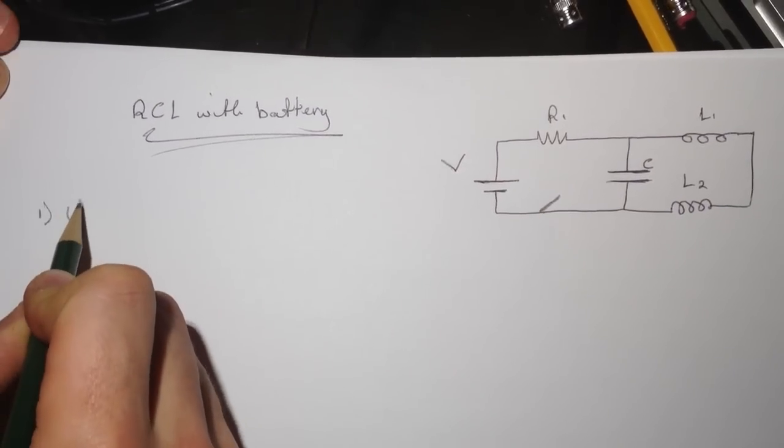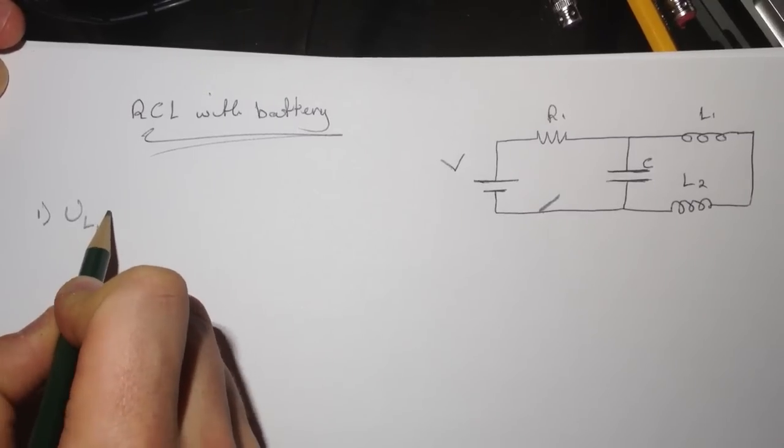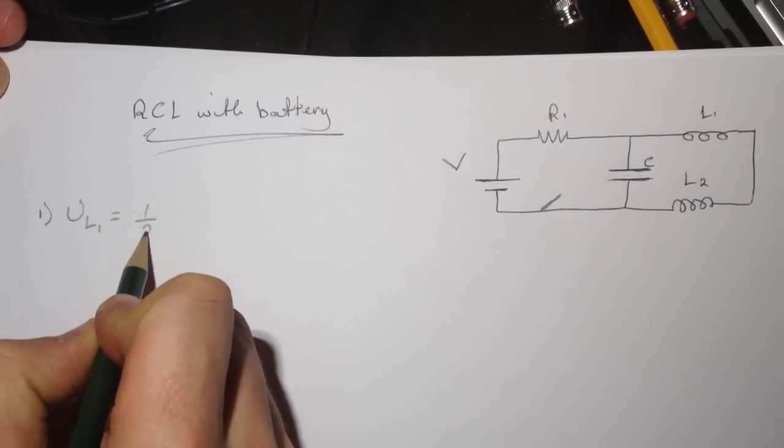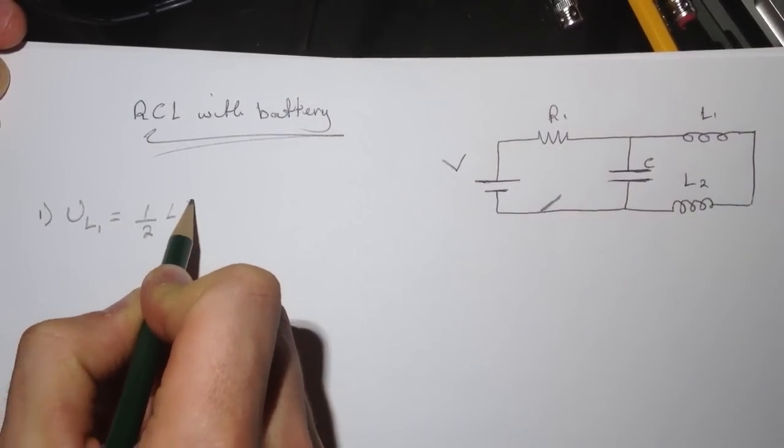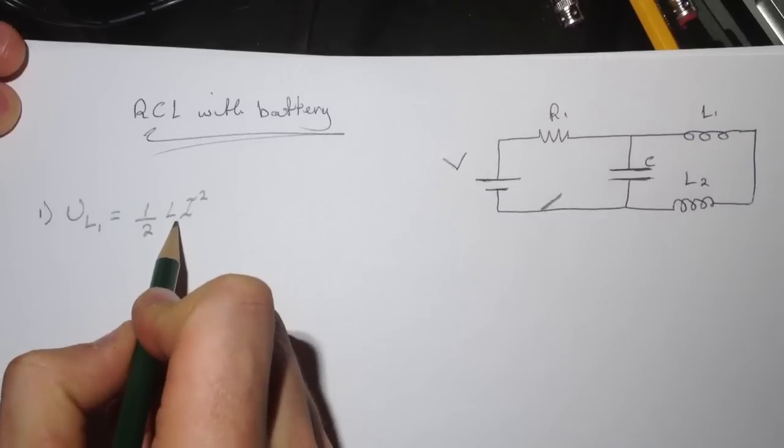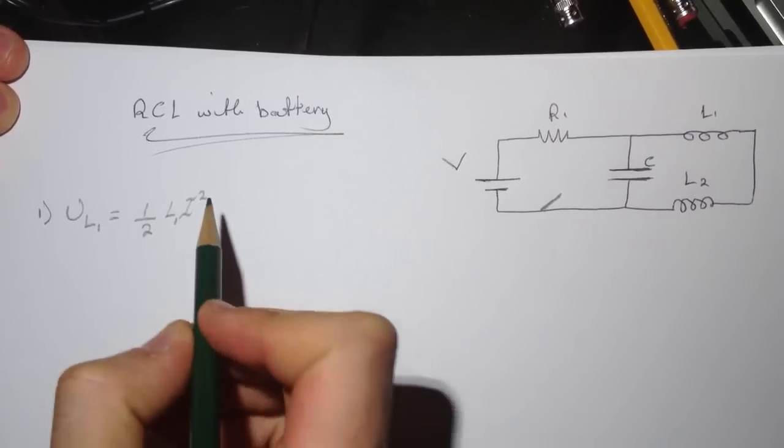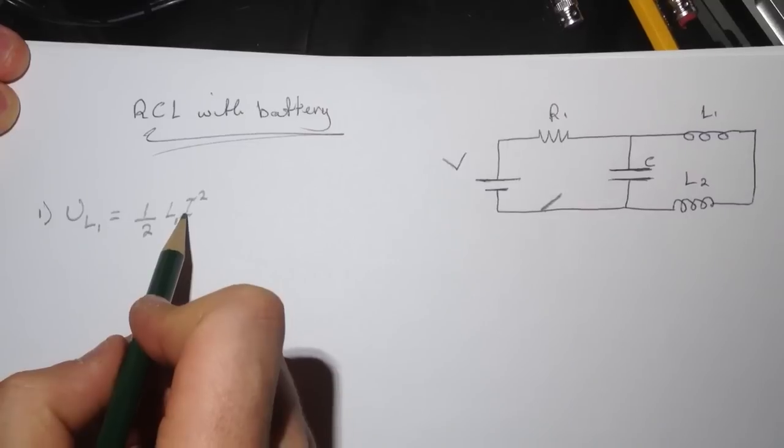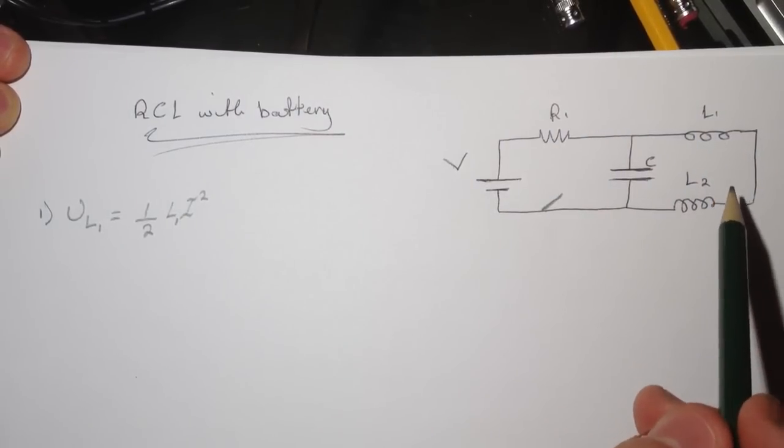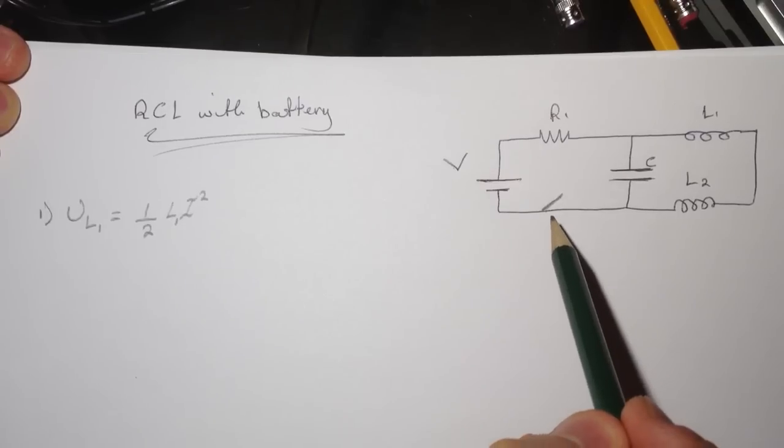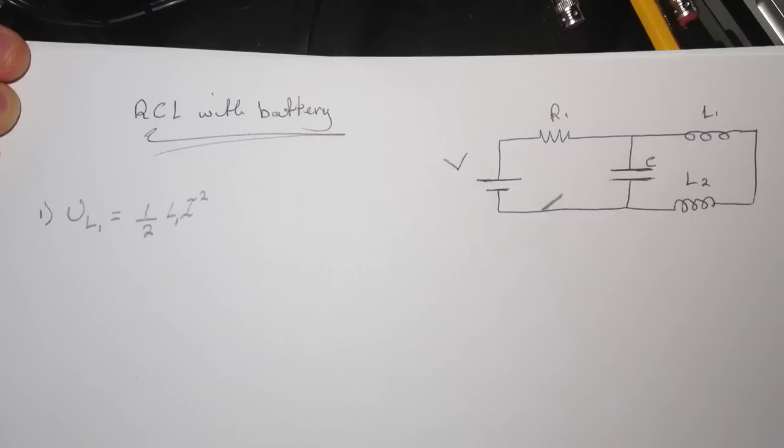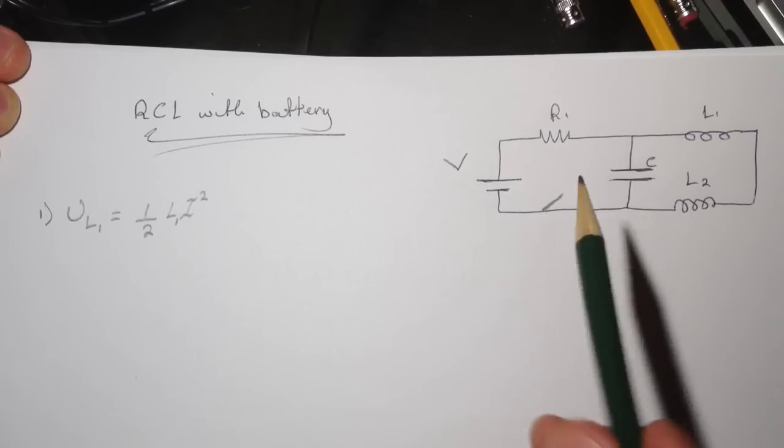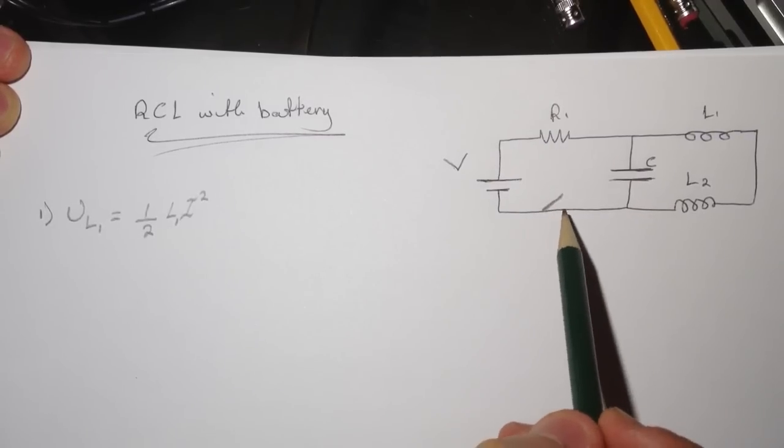The energy in the inductor U_L1 will be equal to half L I squared. So we need to know the current that's going through the inductor before the switch was open.